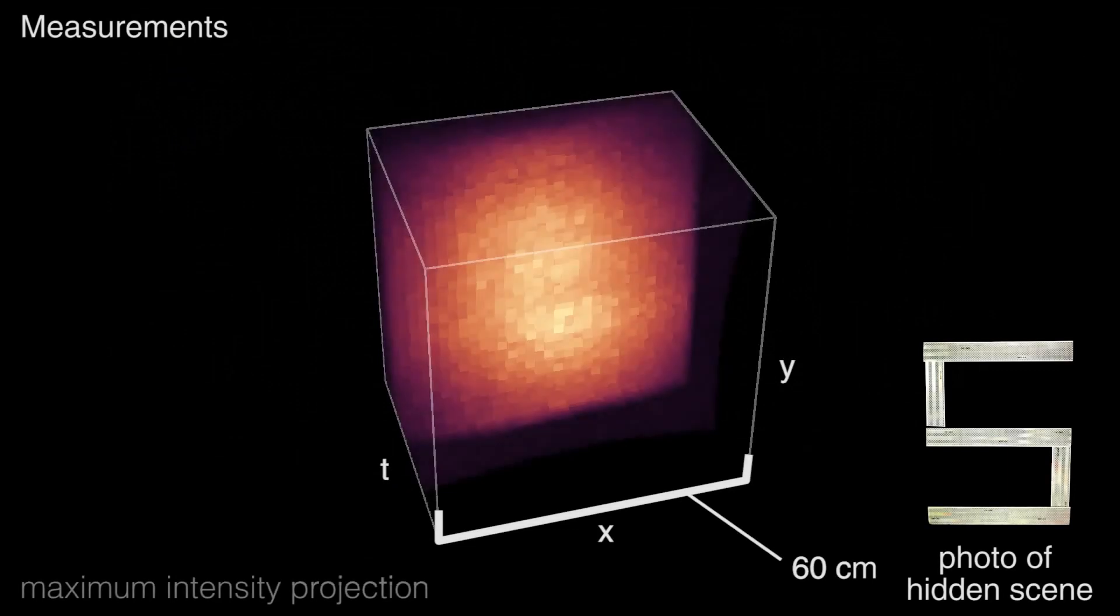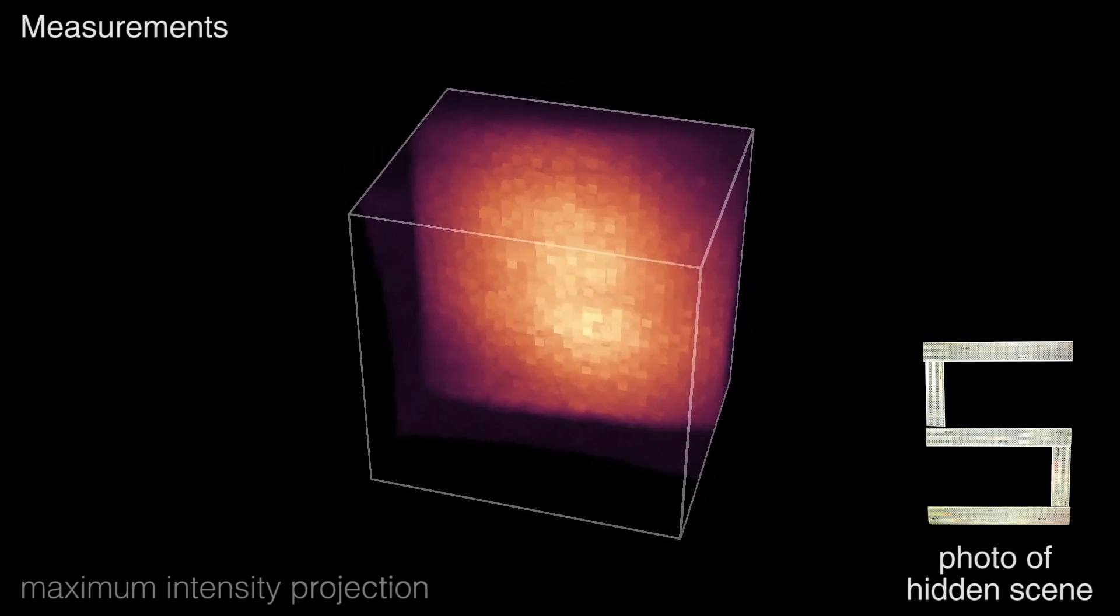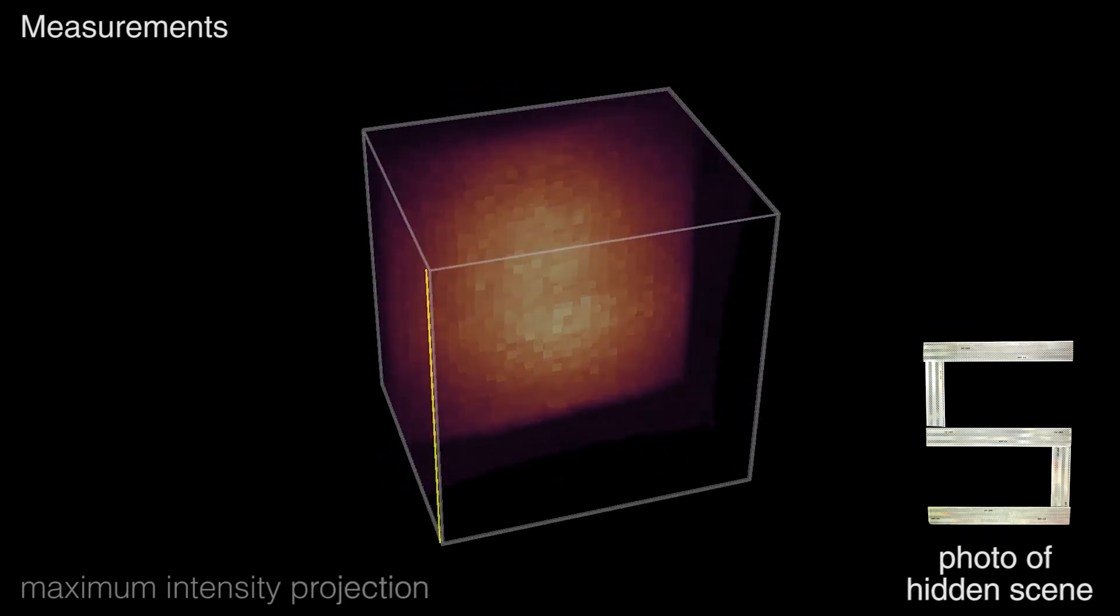The measurement volume is acquired after scanning a grid of points on the scattering media. This video shows the measurements at each time slice. The structure of the hidden object is completely obscured by scattering.